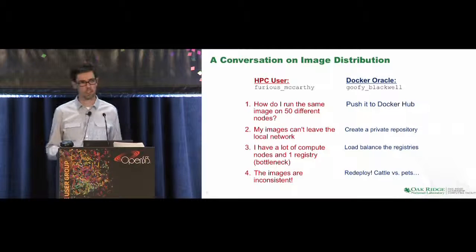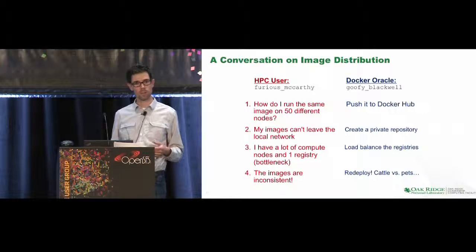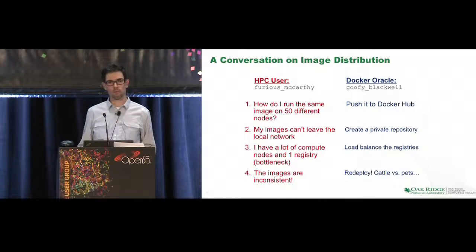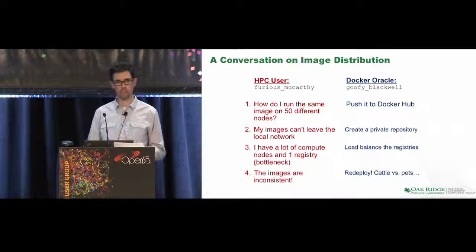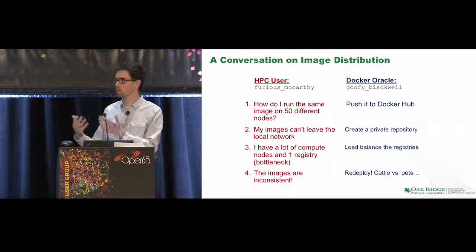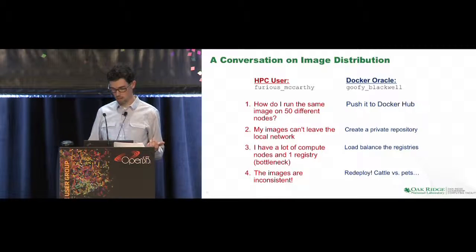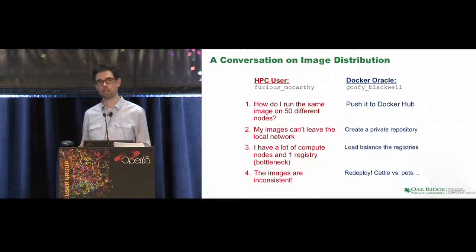I'm going to start with a little fictional conversation. There are two people: an HPC user who has a weather modeling application that took a week to package up, and who now wants to run it on a cluster. He asks, how do I run the same image on 50 different nodes? The other character is the Docker Oracle, who knows everything about the Docker world and says, just push it to Docker Hub. But the HPC user has code he doesn't want to ship off the network — he wants to keep it on site.